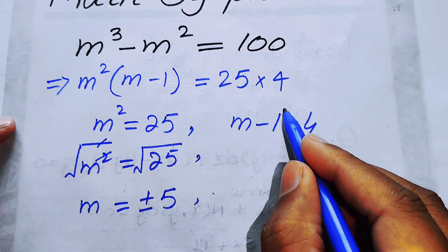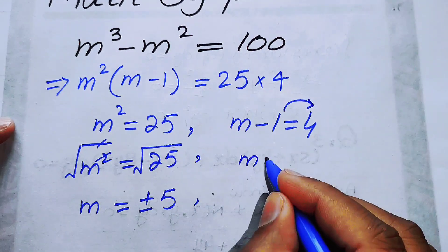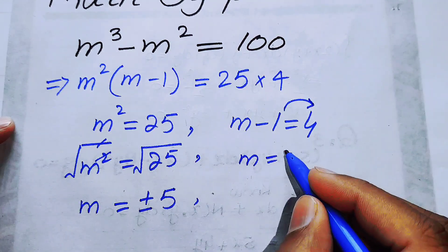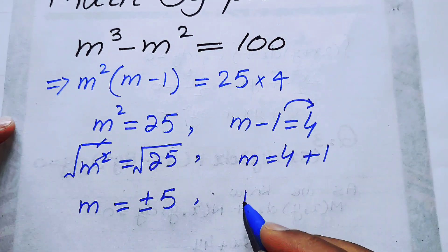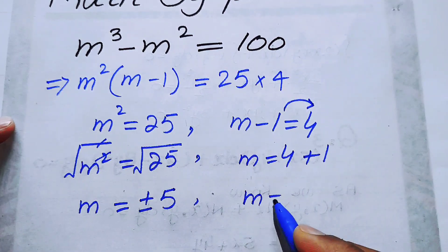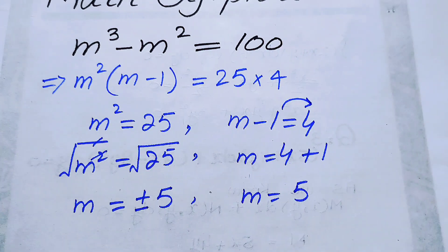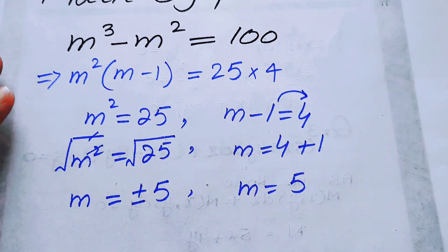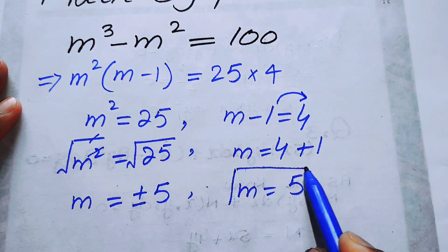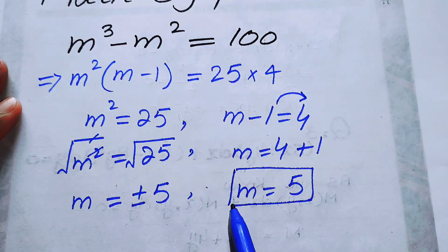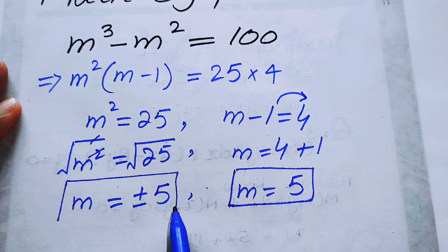Now we solve the second case. We have m minus 1 equals 4; taking the minus 1 to the right-hand side, it becomes m equals 4 plus 1, and finally we get m equals 5. So from both cases we have the values m equals plus or minus 5.